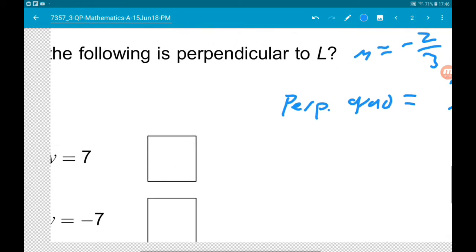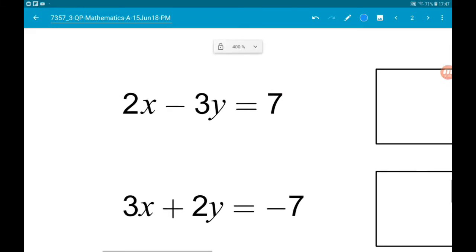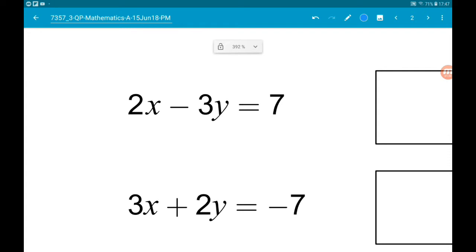So let's have a look through these. Try and find one that would rearrange to give us a gradient of 3 halves. So it's not going to be this guy because we got a 2 on the x.